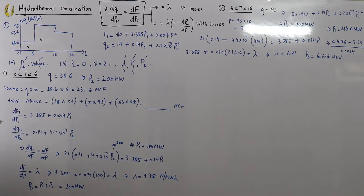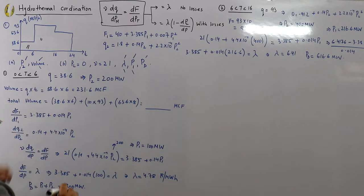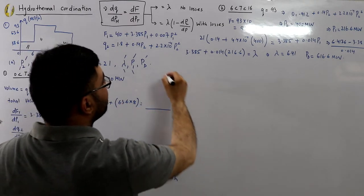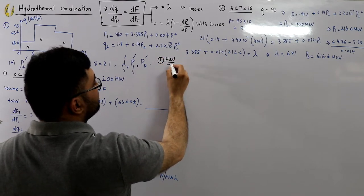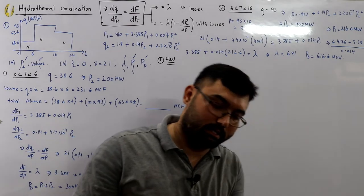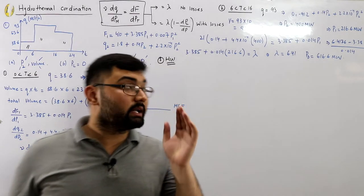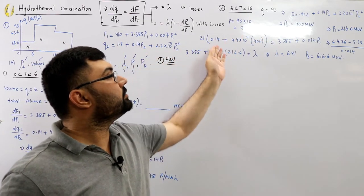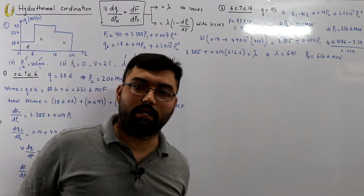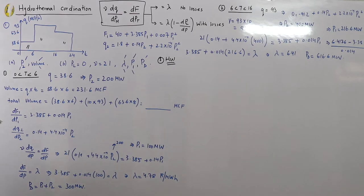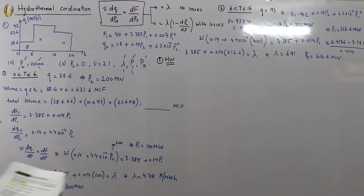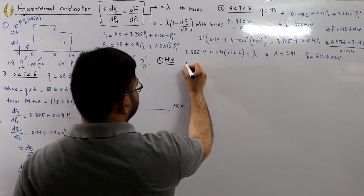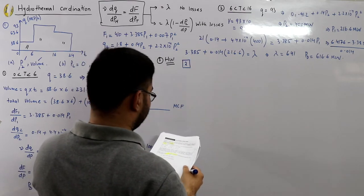That completes Interval 2. Interval 3 (with discharge = 63.6 million cubic feet per hour) is homework: find P2 from the discharge equation, find the volume used, then use the coordination equation to find P1, then lambda, then the power demand — and post your answers in the comment section.